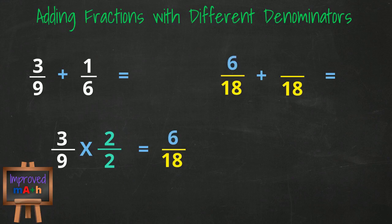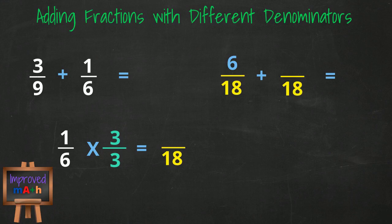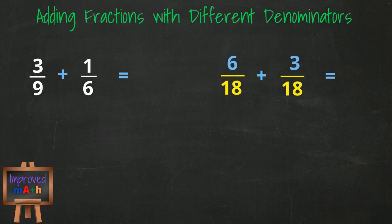For our second fraction, we can convert it to an equivalent fraction of something over 18 by multiplying the denominator of 6 by 3. Since we multiply the denominator by 3, we must also multiply the numerator by 3, and we get an equivalent fraction of 3 over 18. Since both fractions are now rewritten with the same denominator, we can add our numerators together. 6 plus 3 equals 9 over 18, and since 9 goes into 18, that simplifies down to 1 half.